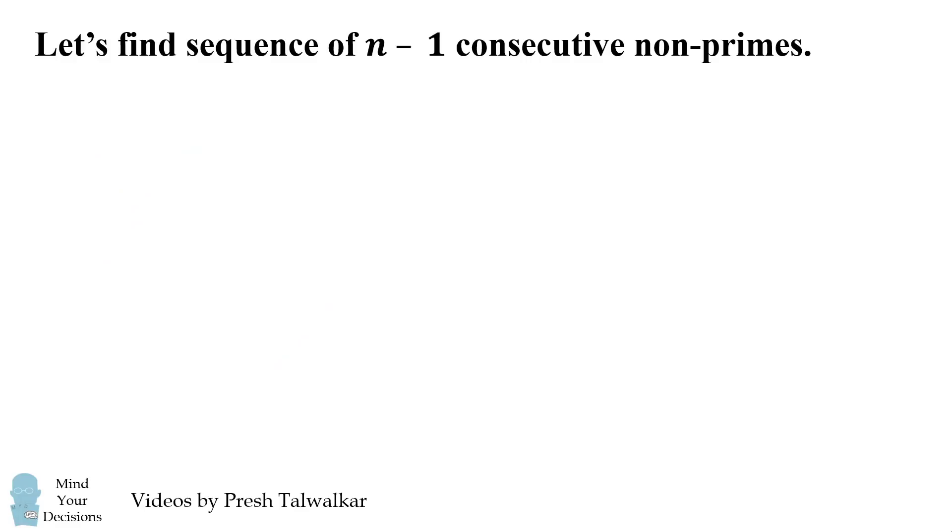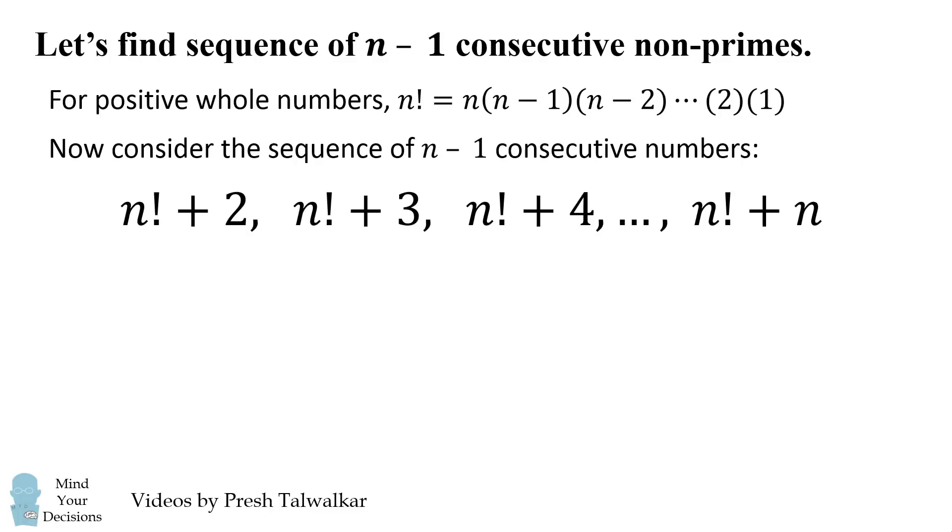Let's find a sequence of consecutive non-prime numbers. Recall that for positive whole numbers, n factorial is the product from n to 1. Now consider the following sequence of consecutive numbers.